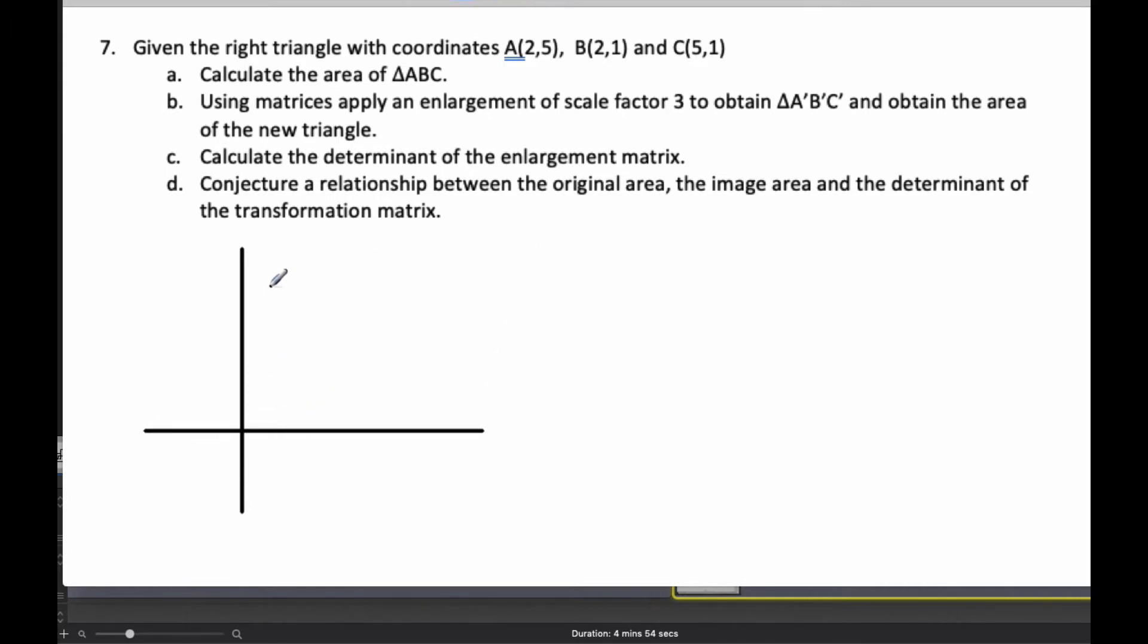where we have 2, 5 as A, we have 2, 1 as B, and we have 5, 1 here as C.